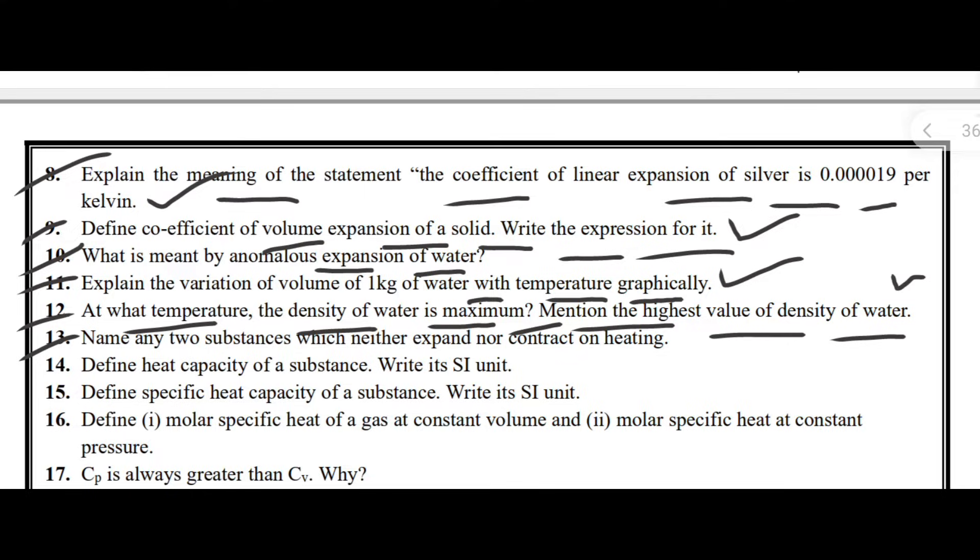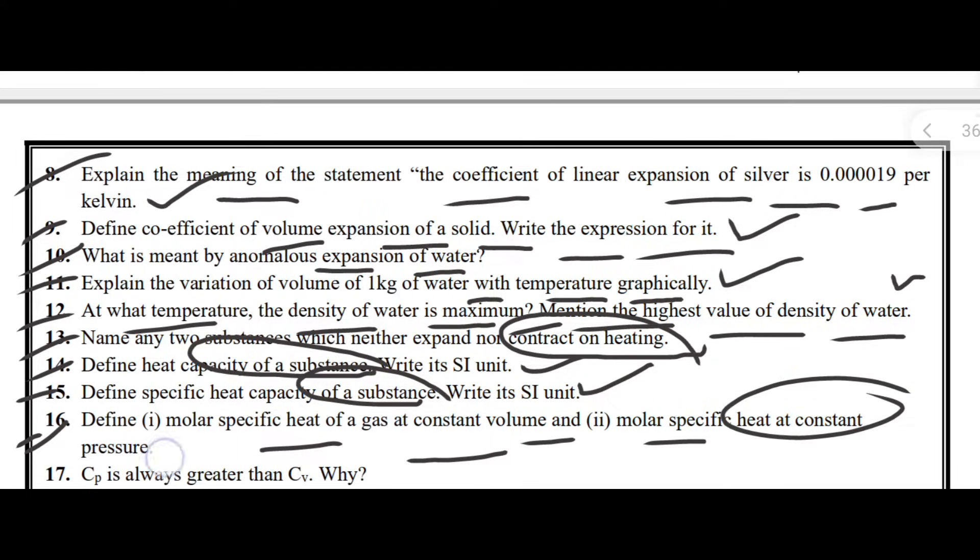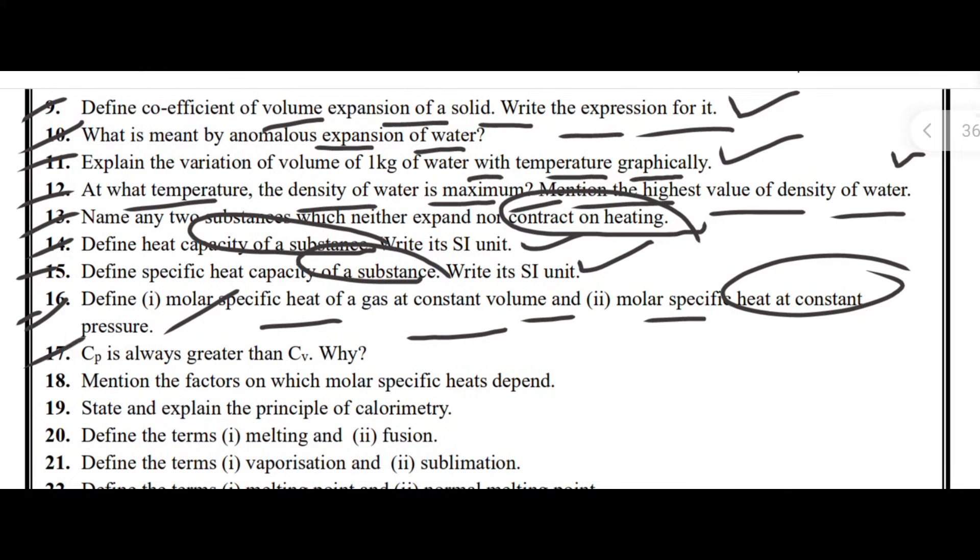Next one, name any two substances which neither expand nor contract on heating. Next one, define heat capacity of a substance, write its SI unit. Next one, define specific heat capacity of a substance, write its SI unit.